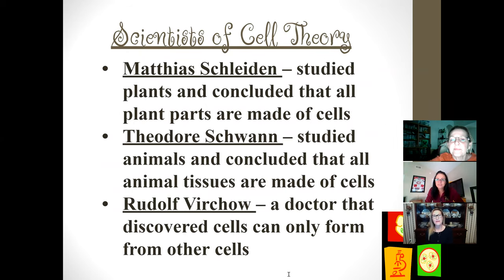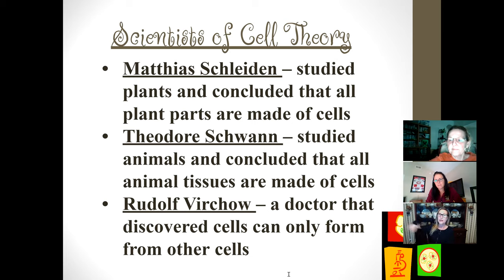First we have Matthias Schleiden, who studied plants and concluded that all plant parts are made of cells — trees, bushes, grass, and flowers are all made of cells. To remember him, we picture ourselves on a piece of cardboard sliding down a very grassy hill, seeing bushes, trees, and beautiful flowers — all the plants that are in fact made of cells.